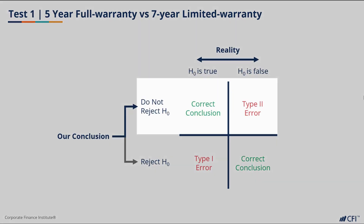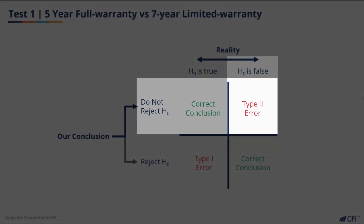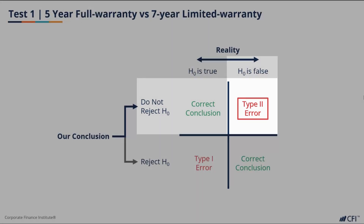When our test fails to reject the null hypothesis, but the sample distributions are actually different, we call this a type 2 error, or a false negative.